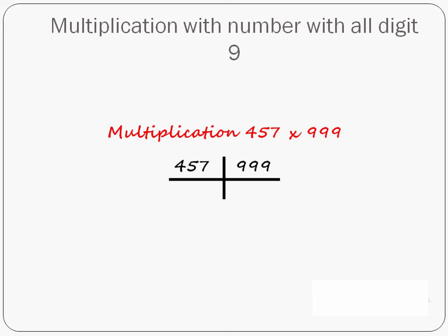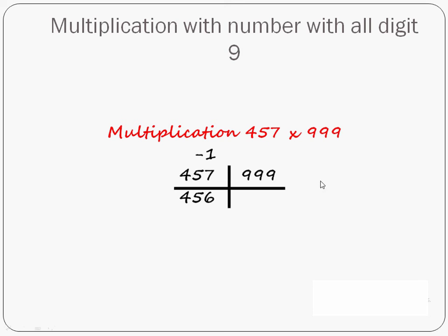In the first example — multiplication with a number where all digits are 9 — the key rule is: if the number is 3 digits, then the 9s must also be 3 digits for this method to apply. Suppose you want to multiply 457 with 999. It's a big number, you'd think you need paper and pen — but you don't. The first step is to subtract 1 from 457, which gives you 456.